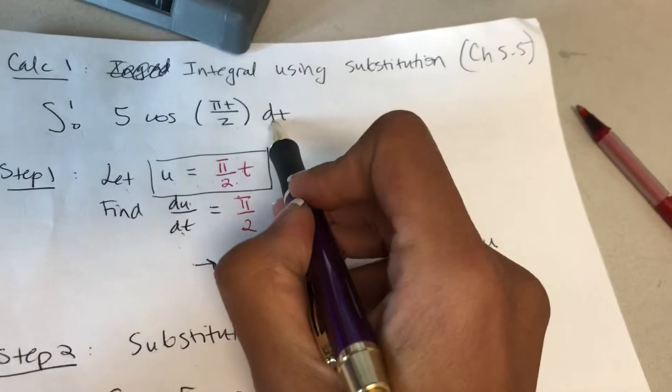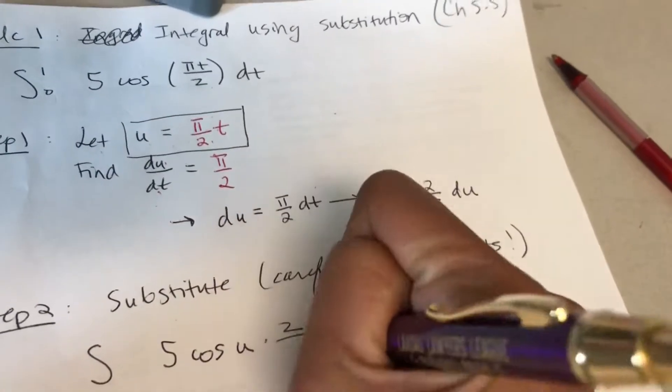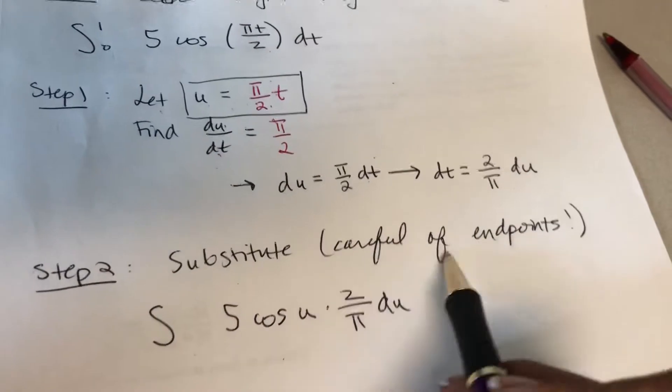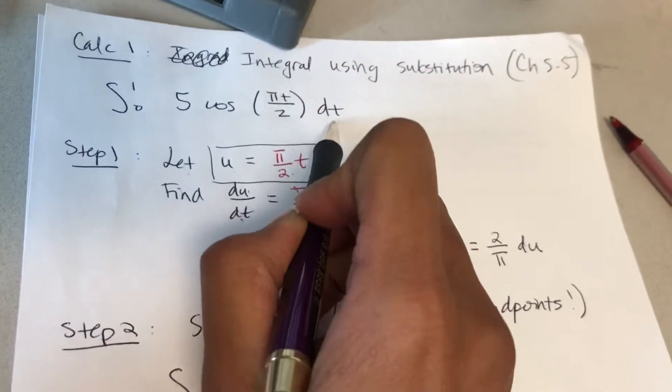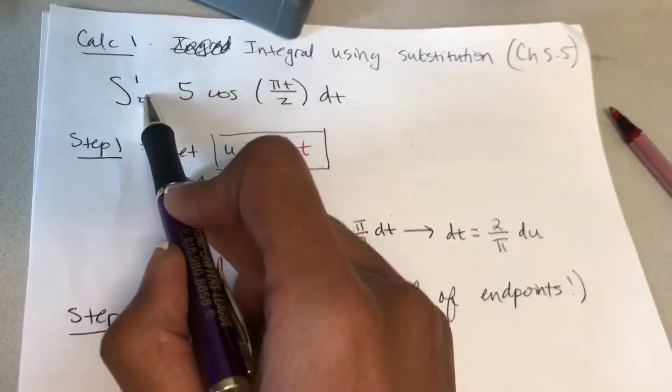When I have this dt here, I'm going to substitute dt with 2 over pi times du. So times 2 over pi du. And the endpoints, be careful of the endpoints. These endpoints are for t. Now that we change to u, we can no longer use these endpoints.